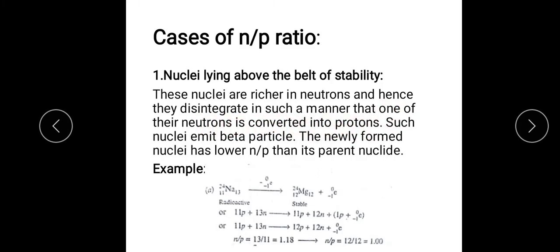Because the neutron count is high, the nuclide tries to convert neutrons into protons. What radiation will be emitted? It will be beta radiation — a beta particle. The daughter nuclide will have a lower N/P ratio. Because the N/P ratio should be nearly equal to 1: if it is equal to 1 it is stable, if it is more than 1 it is unstable.